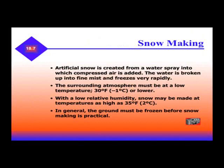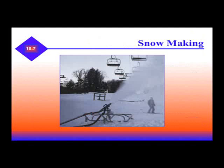Another type of refrigeration system is snow making. Artificial snow is created from a water spray into which compressed air is added. The water is broken up into a fine mist and freezes rapidly. The surrounding atmosphere must be at a low temperature, 30 degrees or lower. With a low relative humidity, snow may be made at temperatures as high as 35 degrees Fahrenheit. In general, the ground must be frozen before snow making is practical. This is an example of a snow making machine on a ski slope.